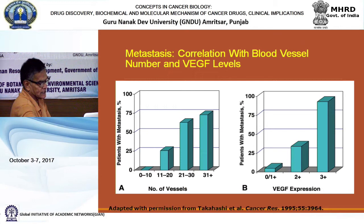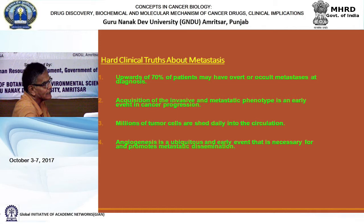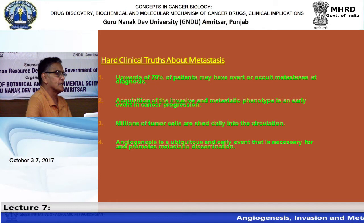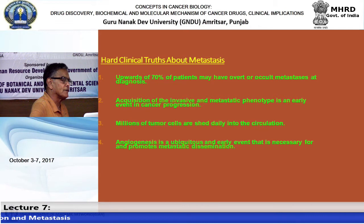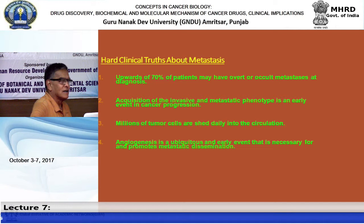The TNM staging system was discussed previously. The real truth about metastasis is that 70% of patients may already have metastasis at time of diagnosis. As one former mentor noted: if you have cancer, pray for breast cancer - because it is the most studied and has very standardized protocols with a remarkable survival rate.